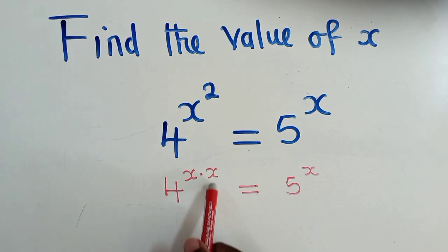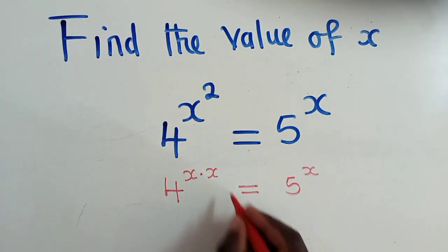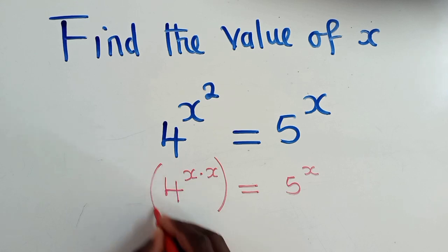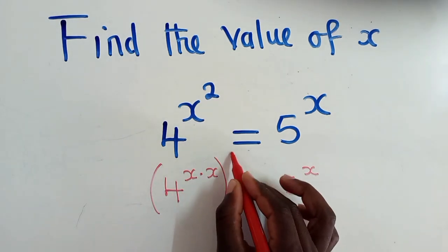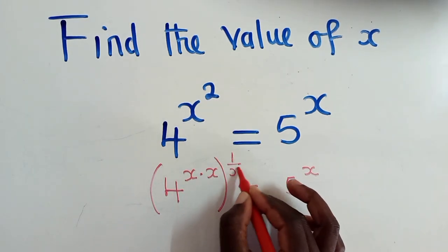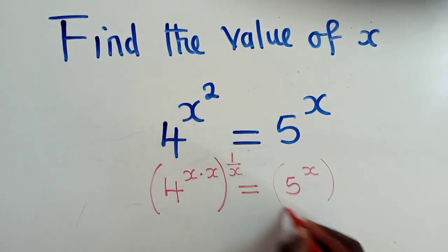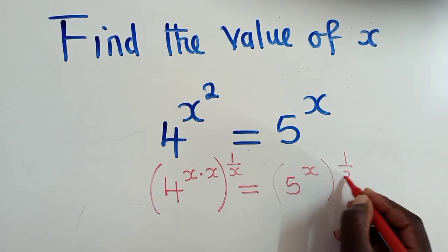So thereafter, the reason why I've done this, I want you to see the pattern, how we are canceling this x under this x. So thereafter, we are going to say whatever is inside here to the power 1 over x. And this side also power 1 over x.